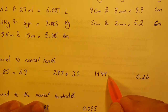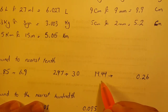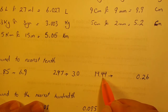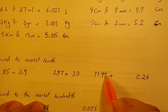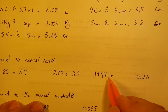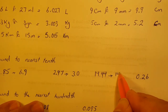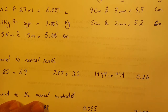For 14.44 rounded to the nearest tenth: the tenths digit is 4, followed by 4. Since 4 is less than 5, we round down, so it rounds to 14.4.